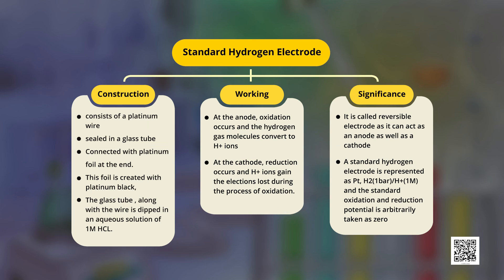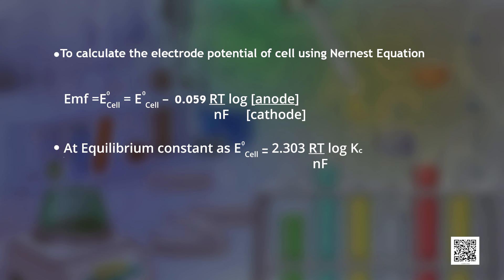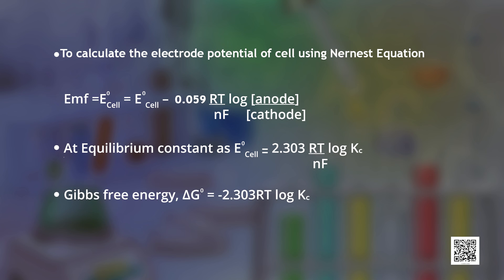To summarize today's discussion: we started with the standard hydrogen electrode, which is a special reference electrode, and studied its construction, working, and special characteristics. We also learnt how to calculate the electrode potential of the electrochemical cell using the Nernst equation: E cell = E° cell − (0.059/N) log([ions at anode]/[ions at cathode]). We then correlated this equation with the equilibrium constant: E° cell = (2.303RT/NF) log Kc, and further extended it to ΔG° = −2.303RT log Kc.